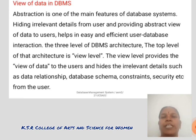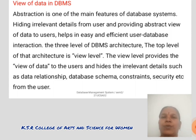View of Data in Database Management System. Abstraction is one of the main features of database management system. Hiding relevant details from the user and providing an abstract view of the data helps in easy and efficient user-database interaction. The three levels of database management system architecture. The top level of architecture is the view level. The view level provides the view of data to the user and hides the irrelevant details such as data, relationship,